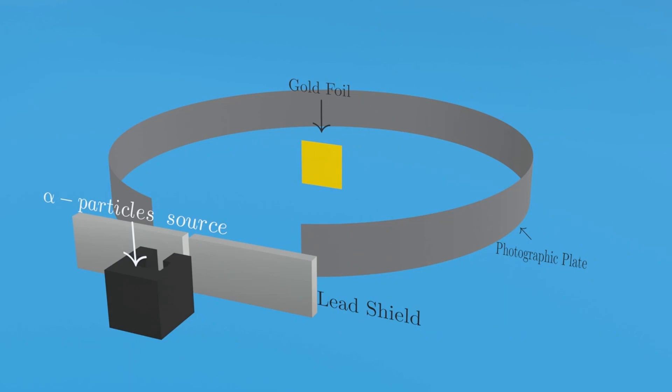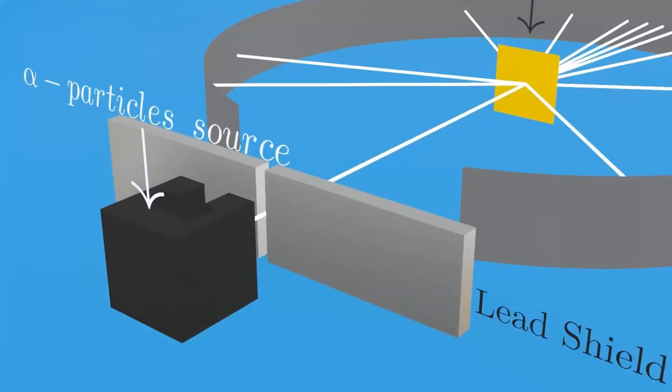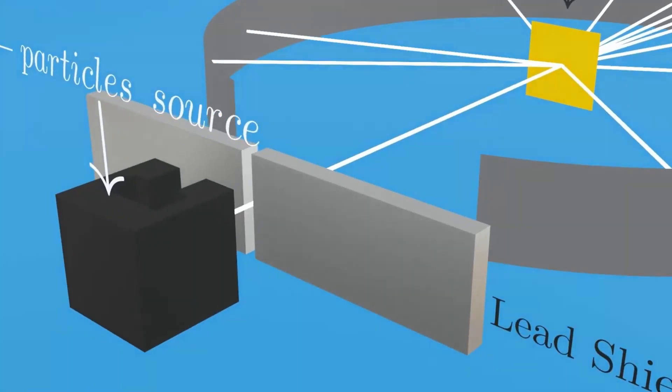In our case, we employ a radioactive material, radium, as the source of alpha particles. Within the lead shield, there is a narrow cut designed to allow a focused beam of alpha particles to pass through.